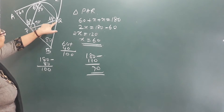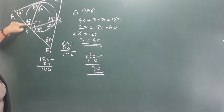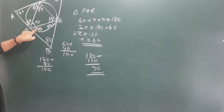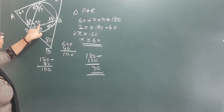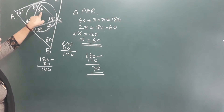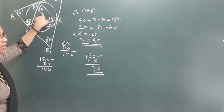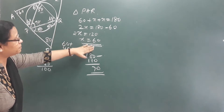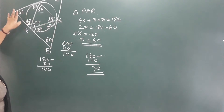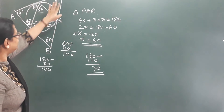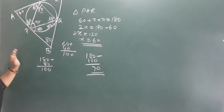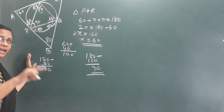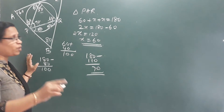With 50 and 60, we have 180 minus (50 plus 60) which is 180 minus 110, giving 70. So angle P equals 70. The triangle PQR has angles: angle P equal to 70, and the other angles are 60 and 50. We have found all the angles of the triangle.